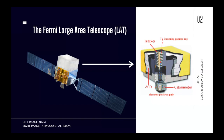Once the electron-positron pair arrives at the bottom of the telescope, it faces the calorimeter, where a particle shower develops and we can reconstruct the original energy of the photon. The anti-coincidence shield covers the telescope — it's a plastic scintillator. Every time a charged particle crosses this scintillator, a signal is sent to Fermi's internal system so it knows the particle is not a gamma ray but a cosmic ray.